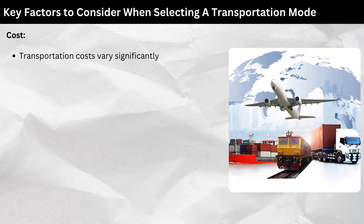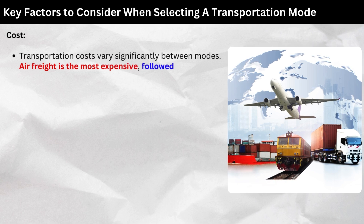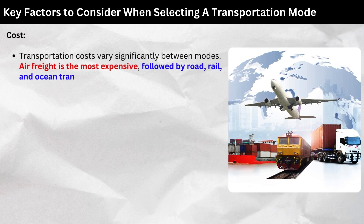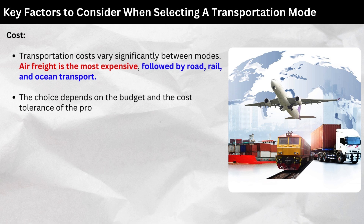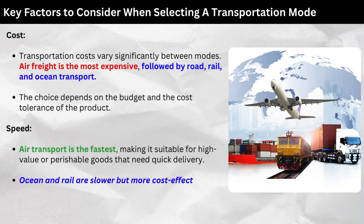Key factors to consider. Cost: Transportation costs vary significantly between modes. Air freight is the most expensive, followed by road, rail, and ocean transport. The choice depends on the budget and cost tolerance of the product. Speed: Air transport is the fastest, making it suitable for high-value or perishable goods that need quick delivery. Ocean and rail are slower but more cost-effective for bulk shipments with less time sensitivity.